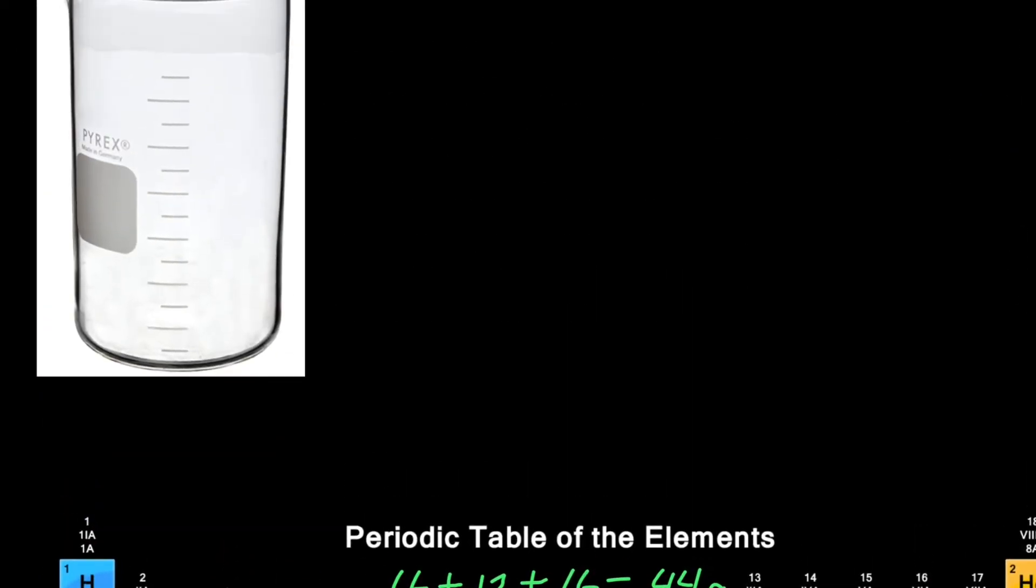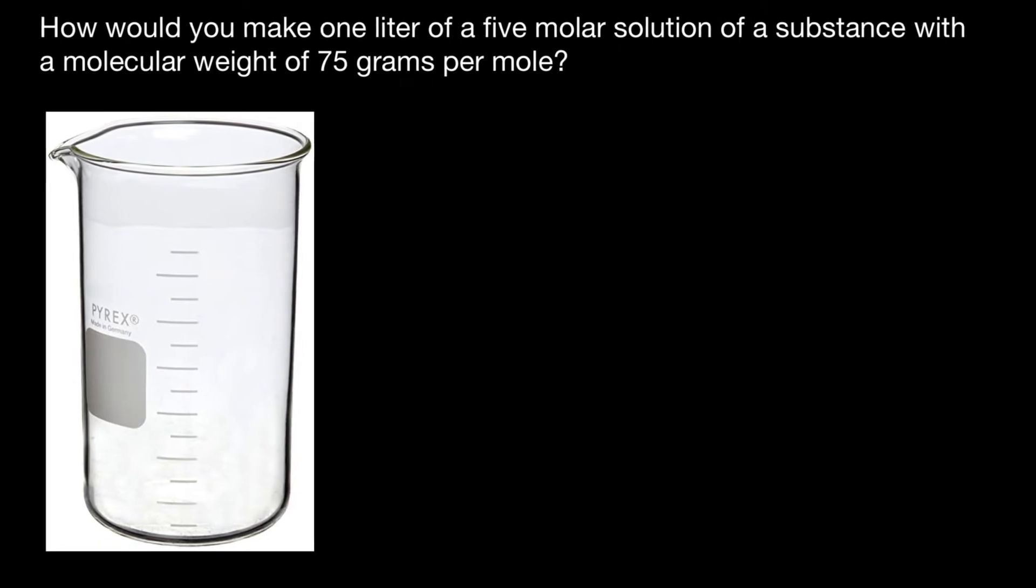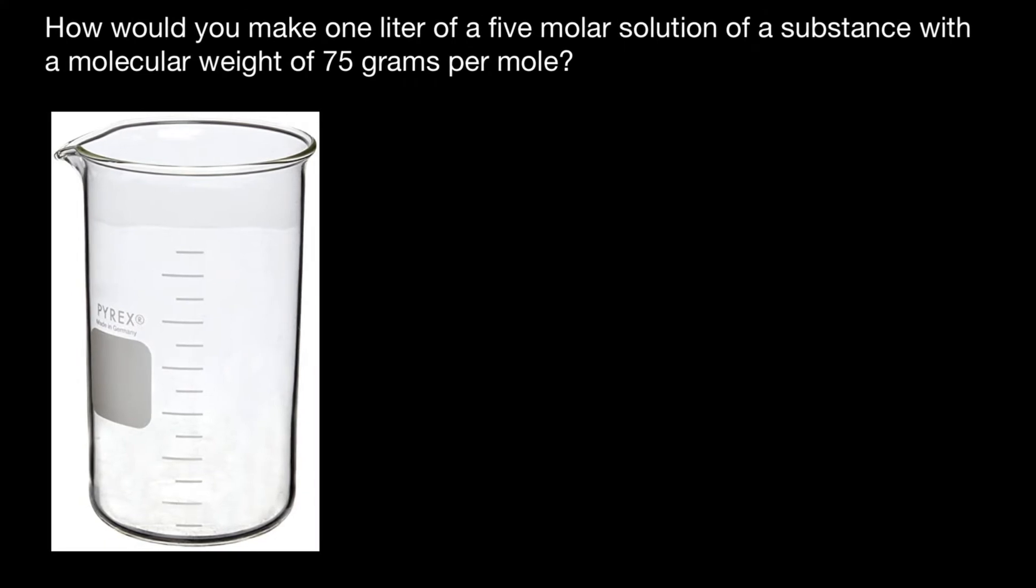Now let's return back to our problem and solve it. We are told that we have some substance which is 75 grams per one mole, and we need to make a five molar solution. That means we have to multiply 75 by 5, and we are going to get 375 grams of our substance, which is going to be five moles of this substance. And this was our first step.